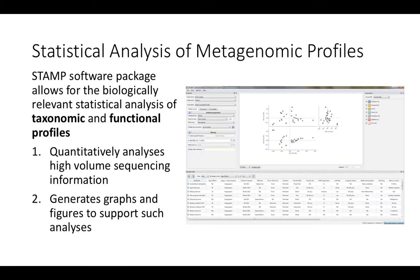STAMP stands for Statistical Analysis of Metagenomic Profiles, and it is a software package that allows for the biologically relevant statistical analysis of taxonomic and functional profiles. The power of STAMP comes in its ability to quantitatively analyze high-volume sequencing information in a relatively short amount of time, and its ability to create graphs and figures to support such analyses.